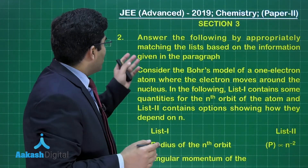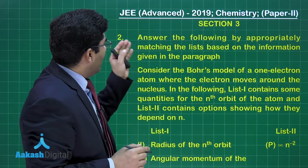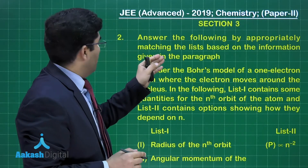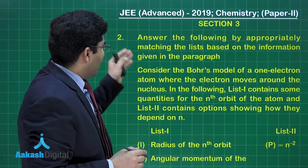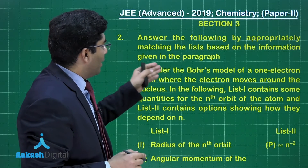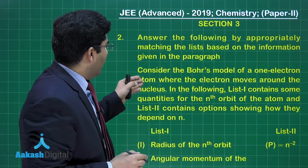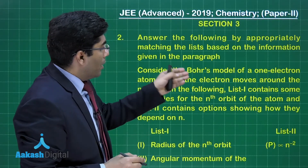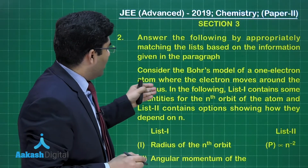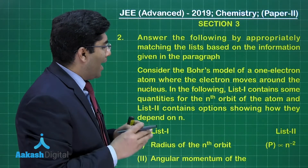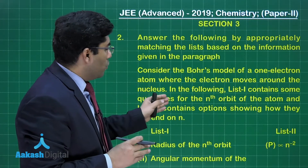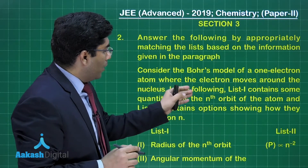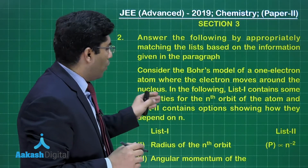Let us move to the next question. In this question, he is asking: answer the following by appropriately matching the list based on the information given in the paragraph. The paragraph asks us to consider Bohr's model of a one-electron atom where the electron moves around the nucleus. List 1 contains some quantities of the nth orbit of the atom, and list 2 contains options showing how they depend on n.